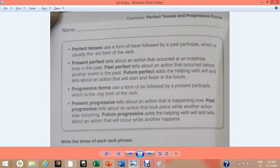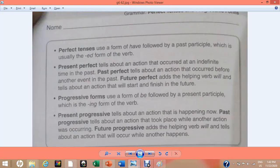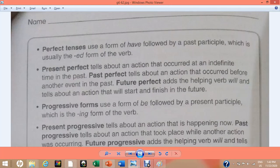On page number 62 we have a topic of perfect tenses and progressive forms. Perfect tenses use a form of have followed by a past participle which is usually the ed form of the verb. Present perfect tells about an action that occurred at an indefinite time in the past. Past perfect tells about an action that occurred before another event in the past. Future perfect adds the helping verb will and tells about an action that will start and finish in the future.